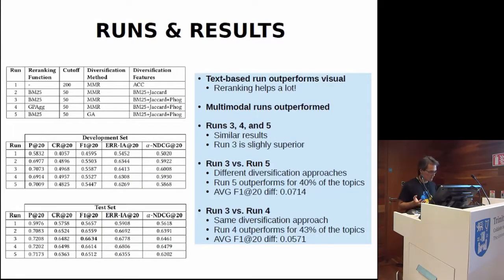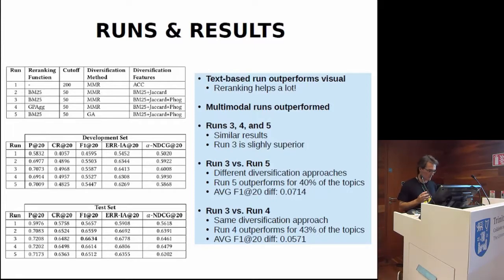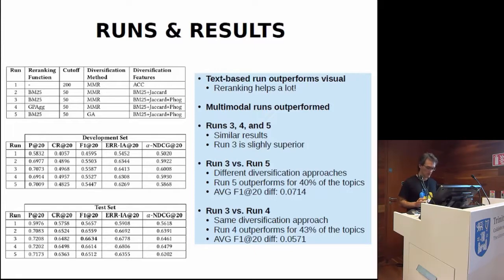From the results, we can confirm that the re-ranking helped a lot. An observation is that Runs 3, 4, and 5 are really close in results, and from comparison on the pairs, they might indicate that they complement each other — so that could be a point of enhancement for the results.